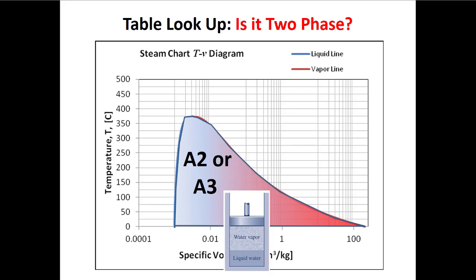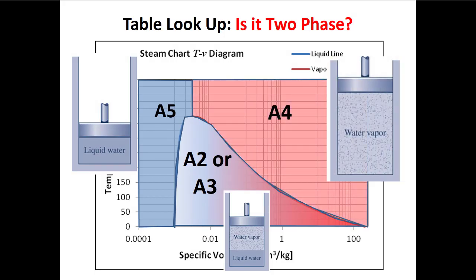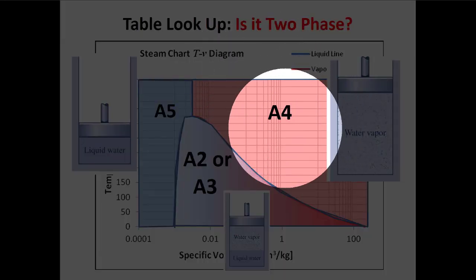If it's two-phase we can look at tables A2 and A3 — under the vapor dome we're looking for quality. If it's a subcooled liquid we could look at table A5, but the data there is sparse. So we have two options for subcooled liquids: we can assume delta U is cv times delta T, or we can assume the specific internal energy of a subcooled liquid equals that of the saturated liquid at the same temperature. For superheated vapor we use table A4.